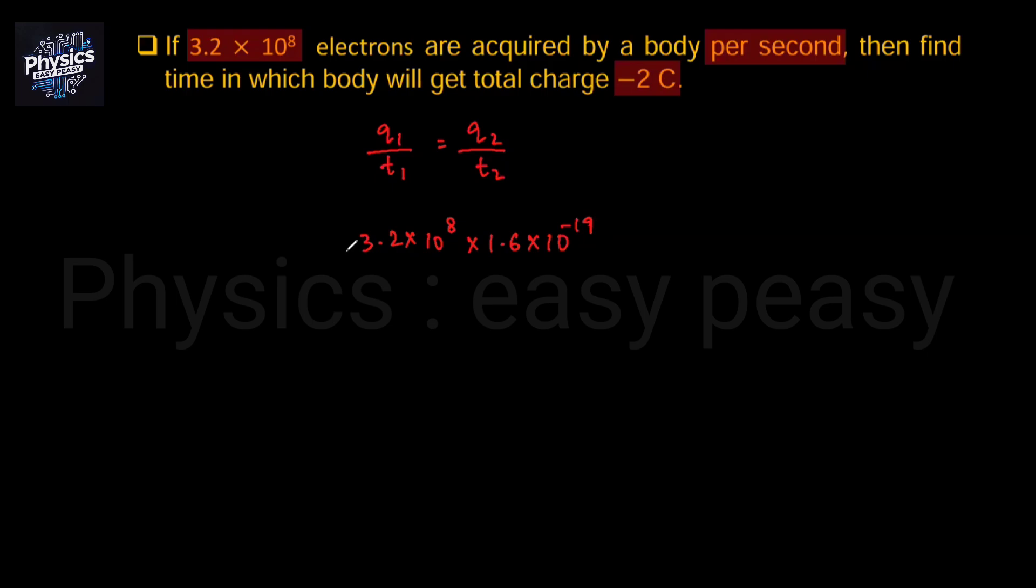If the electron is negative, it will be minus. Divide by time given value 1, is equal to Q2. How much time will the total accumulate? Minus 2 coulomb. Divide by time T2 and solve it.